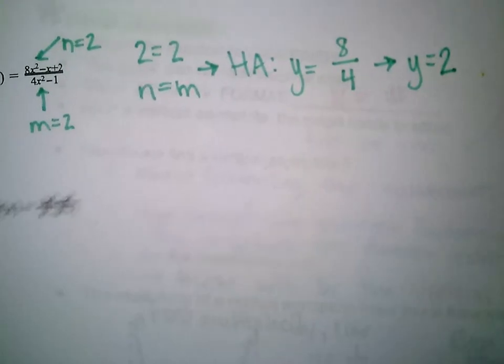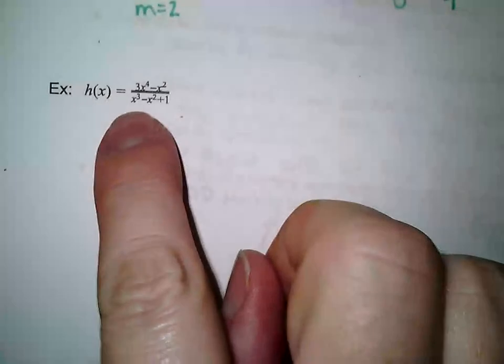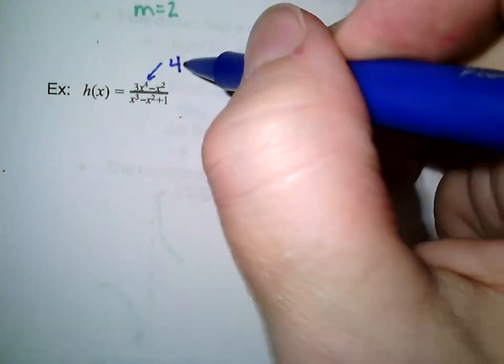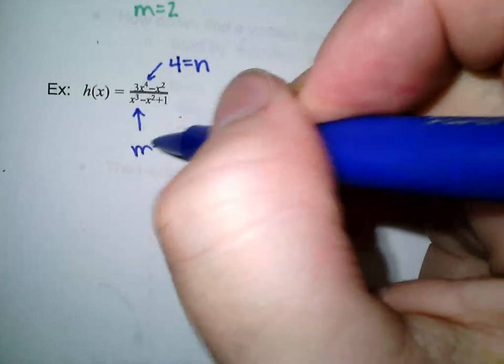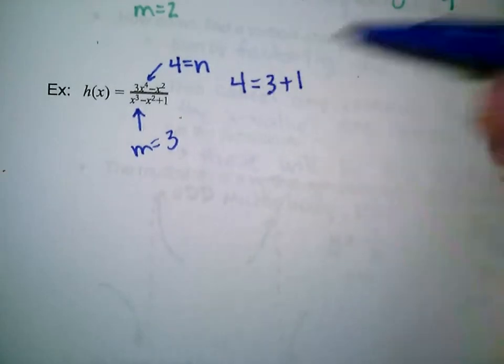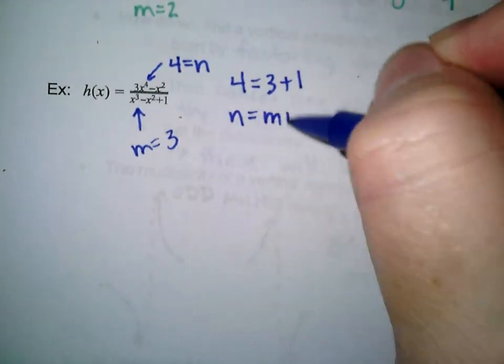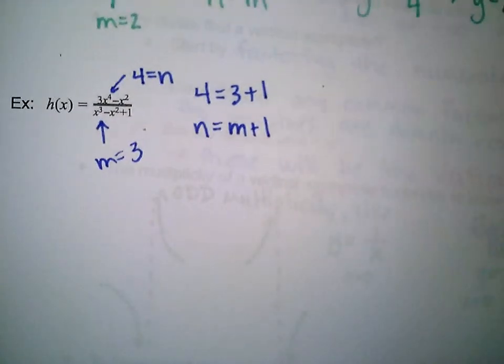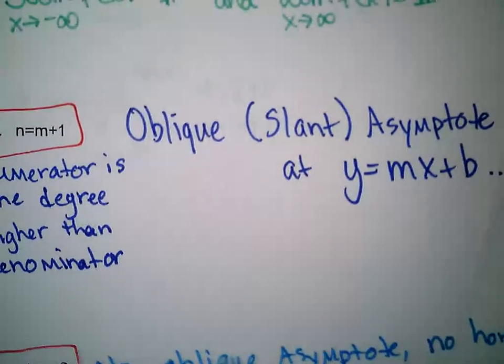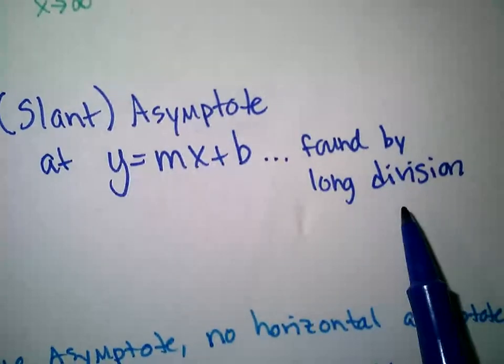Next: the degree of the numerator is 4, the degree of the denominator is 3. The numerator's degree is 1 higher than the denominator's, so n equals 4 and m equals 3, giving us 4 equals 3 plus 1. This is the case that produces an oblique or slant asymptote, which means we have to do polynomial long division.